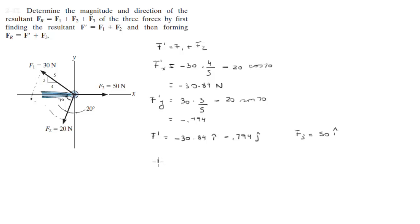It has no Y force, so all you have to do is add these two together. So F prime plus F3 is equal to FR, which is the resultant force: negative 30.84 plus 50 on the X direction, which is 19.16 i. The Y component remains the same since F3 doesn't have any effect on the Y axis.